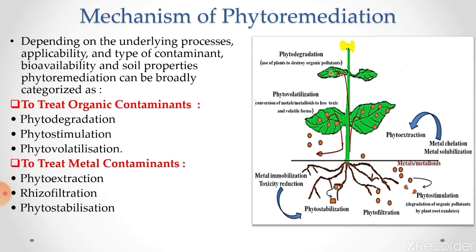In the figure, the plant is shown and by various mechanisms the contaminants are removed. Below ground level, the roots are active by phytostabilization, phytofiltration and phytostimulation, removing metals and organic pollutants. The part above ground level — leaf, stem, stalk, flowers — removes contaminants by phytovolatilization, phytodegradation and phyto extraction.